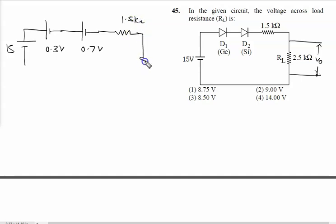Then it is 1.5 kilo ohm and here we have 2.5 kilo ohm. And so the current is flowing like this.